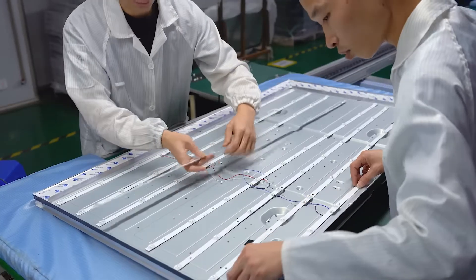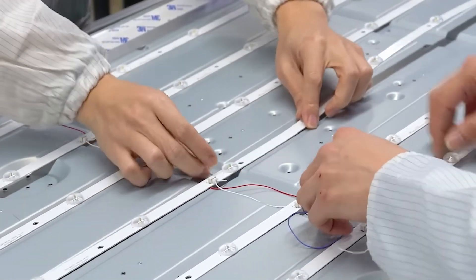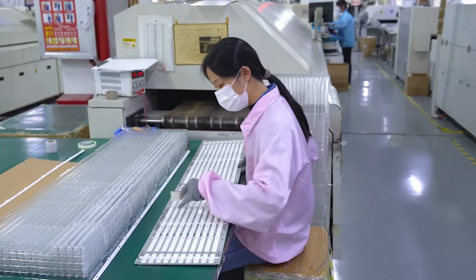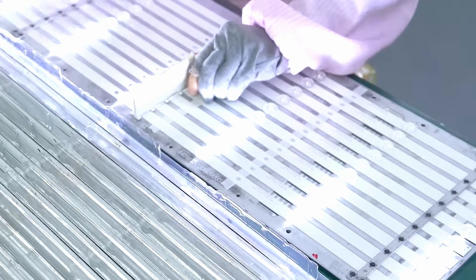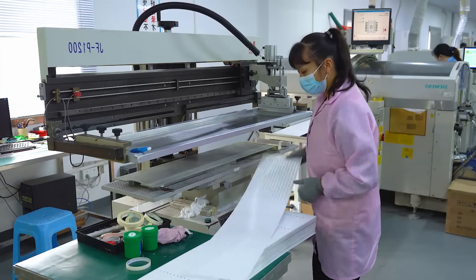Unlike OLEDs, which are self-emissive, LCDs require a backlight to illuminate the pixels. The backlight is usually composed of an array of LEDs. Let's take a closer look at how these LED backlights are manufactured.